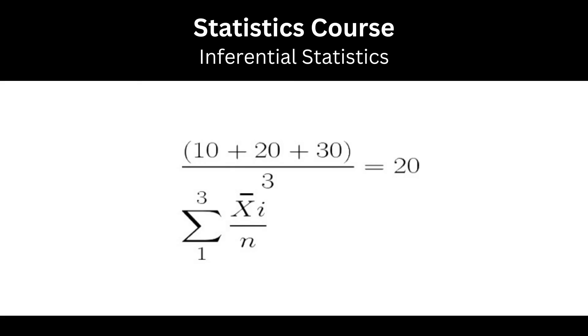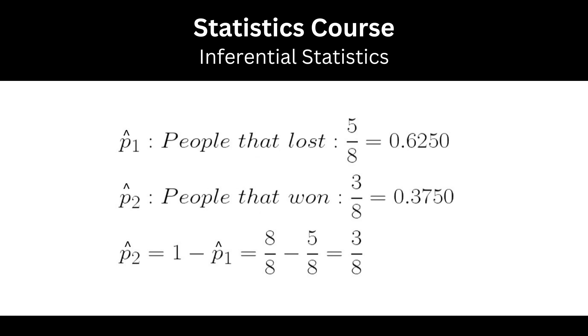Proportion is exactly what the name implies—it is a proportion of the total value. Let's say 3 out of 8 people won. This leaves 5 out of 8 people that lost.